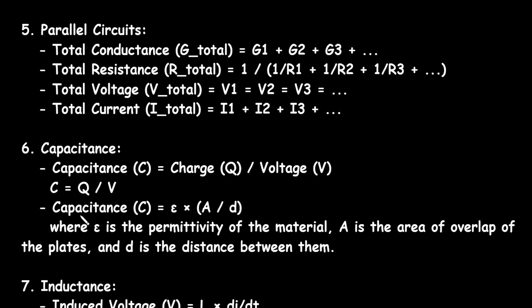There is one more formula for capacitance. Capacitance C is equal to Epsilon into A by D. Where Epsilon is the permittivity of the material, A is the area of overlap of the plate, and D is the distance between the two plates. So C is equal to Epsilon into A by D.